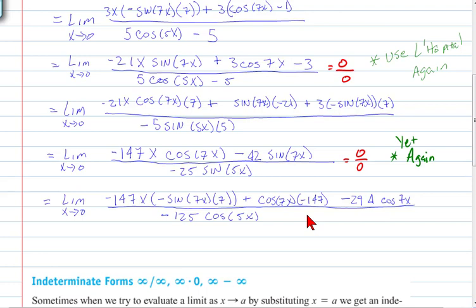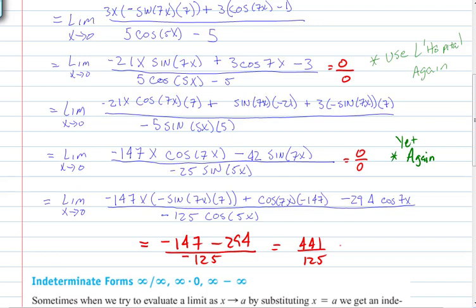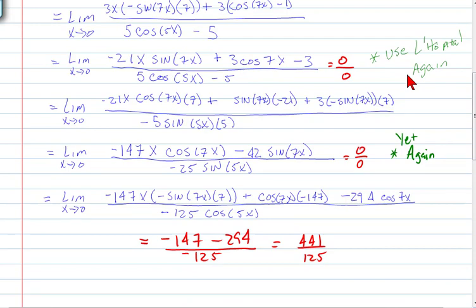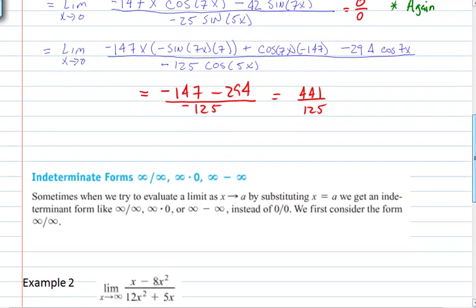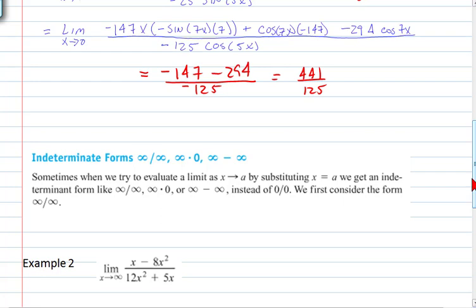Evaluating by direct substitution: cosine(0) is 1, so the sine terms go to 0, and we get negative 147 minus 294 over negative 125 — combining: positive 441 over 125. That's the value of the limit. The important thing is: as long as you have an indeterminate form you can keep applying L'Hopital; the minute you don't, you have to stop. Derivative of the top over derivative of the bottom — not the quotient rule.